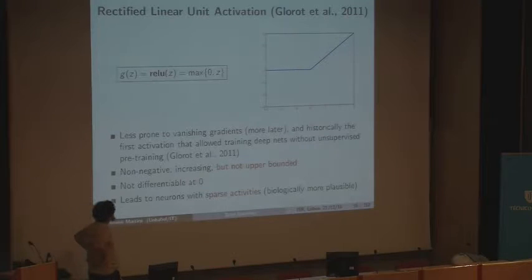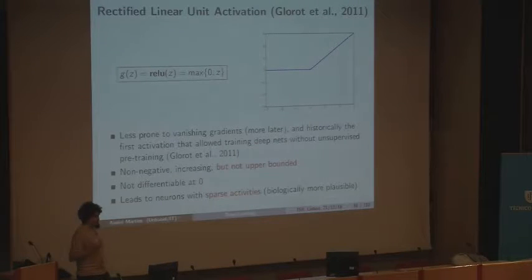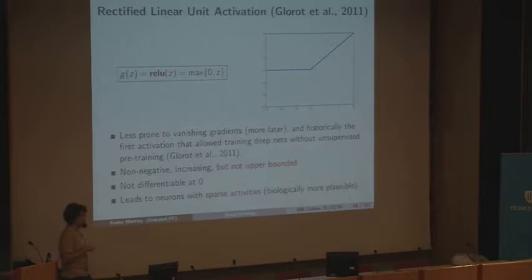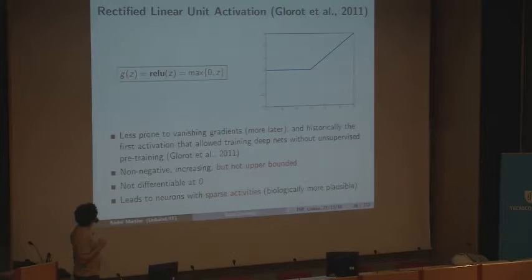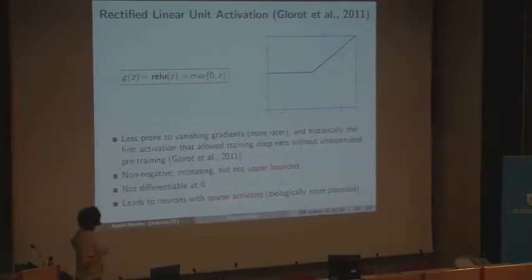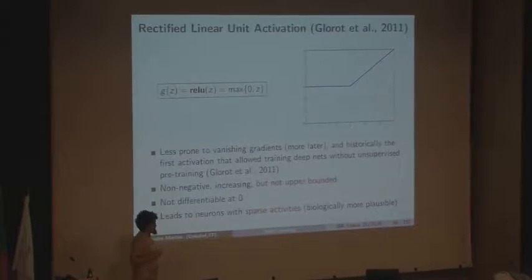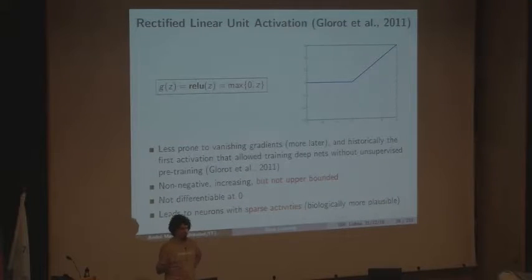A recent activation function that got very popular and has been associated with the new progress in deep learning is the rectified linear unit (ReLU), which unlike the sigmoid and tanh is not completely squashing. Basically what this does is it looks at the input: if the input is negative, it truncates to zero; otherwise it's linear. So it's a piecewise linear activation function. One of the reasons why this got so popular is that this activation function is less prone to vanishing gradients.